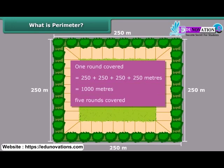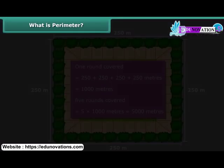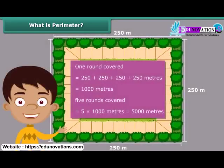Therefore, in five rounds, you covered 5 into 1,000 meters — that is 5,000 meters, or 5 kilometers. Now you are ready to answer your mother's question.